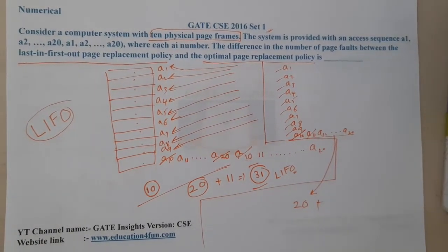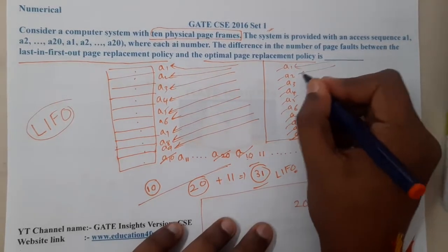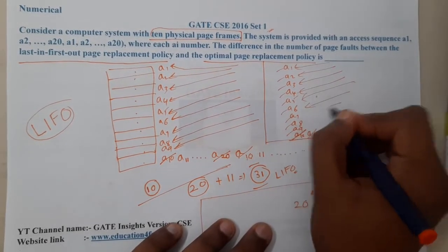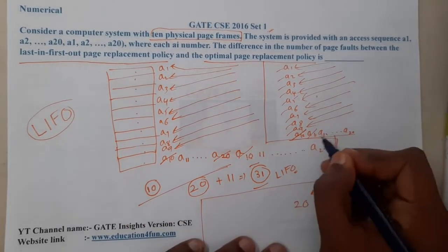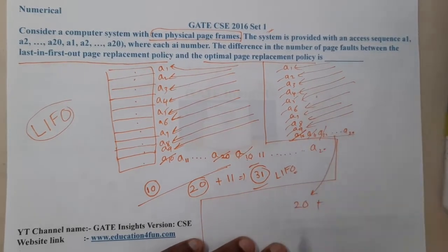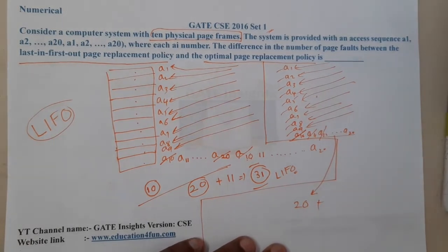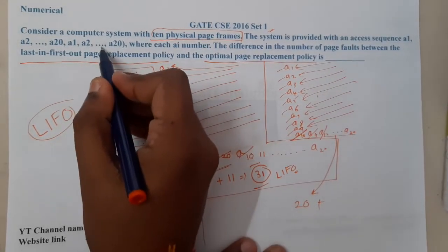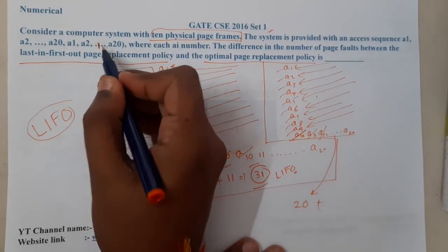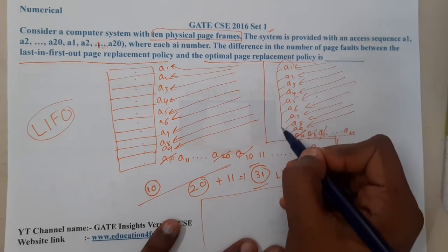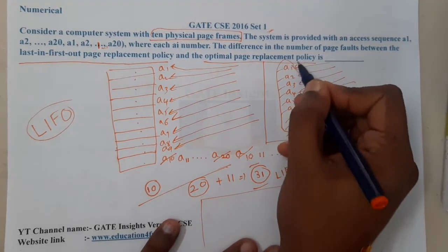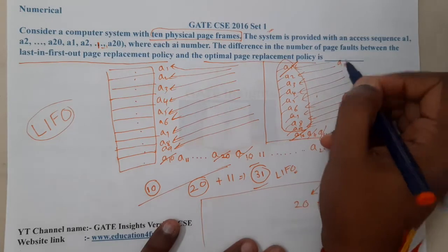In the second pass, a1 is a hit, a2 through a9 are all hits. When we reach a10, it is not in the frames — the frames now hold a1 to a9 and a20. Optimal looks into the future from position a10: the upcoming sequence is a11 through a20, so none of a1–a9 or a20 appear again. Therefore, a20 is replaced with a10.